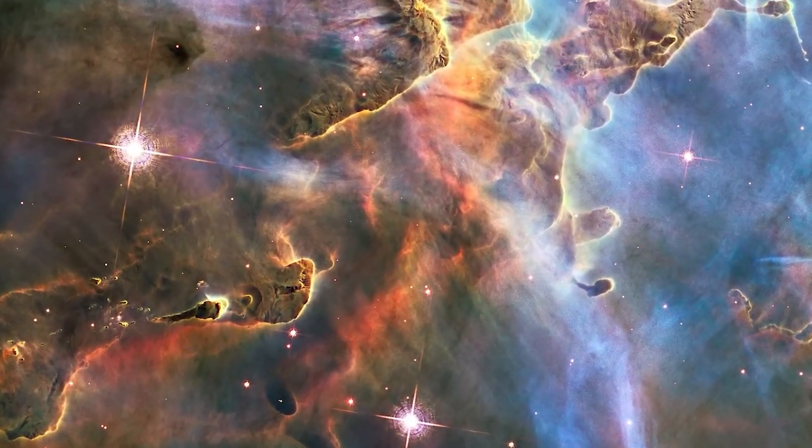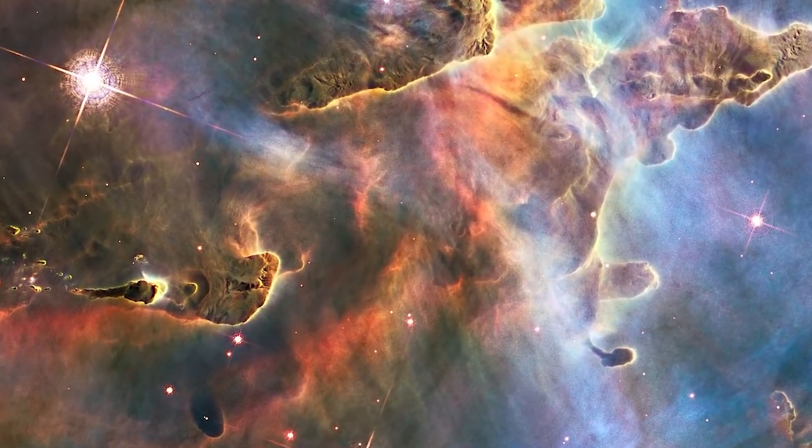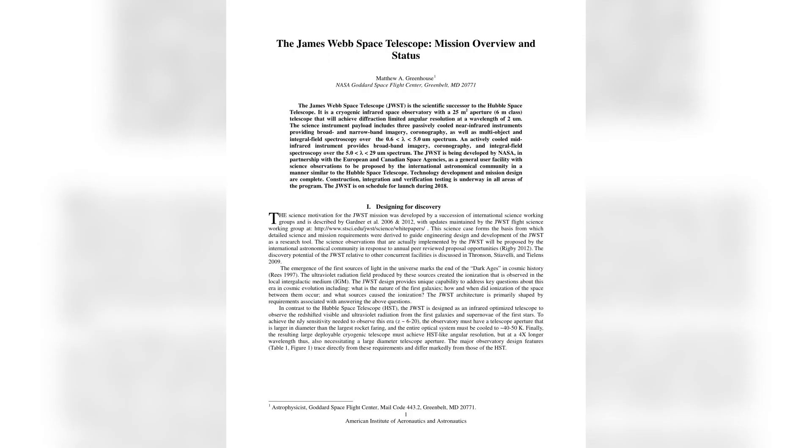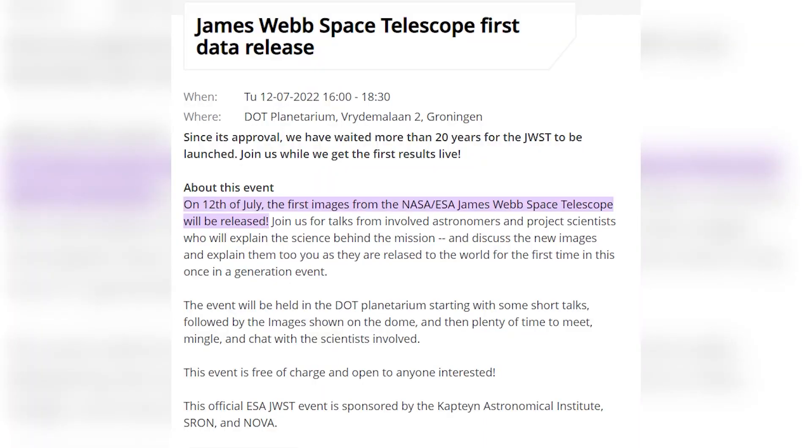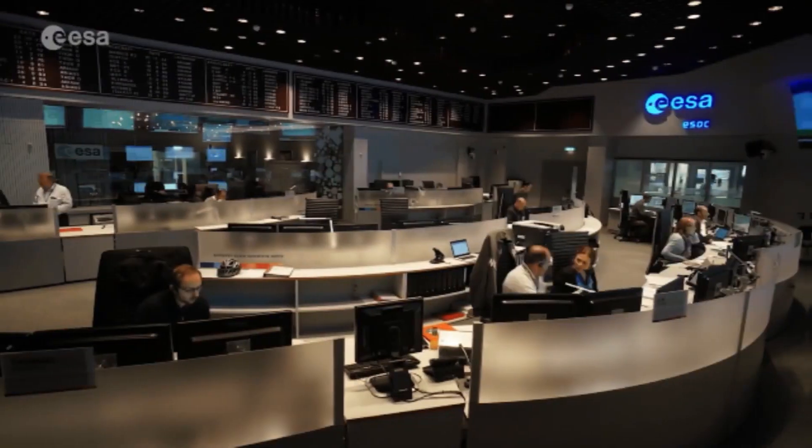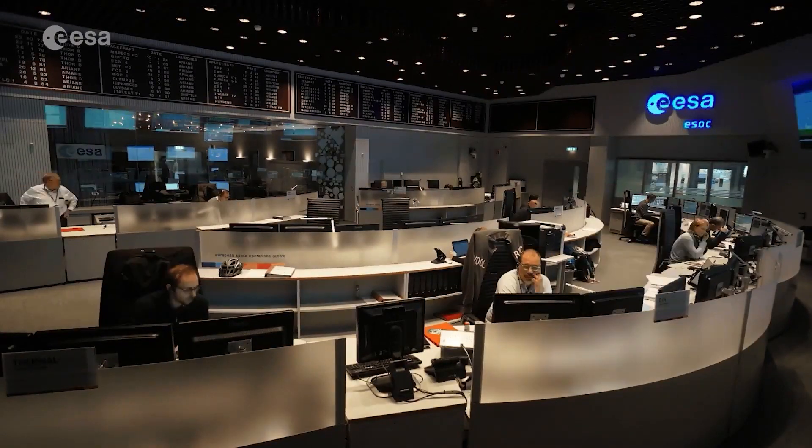Since then, the James Webb Space Telescope has given scientists more stunning cosmic photos. These images have confounded astronomers and cosmologists. Since Webb's photos and data were released, astronomical articles have flooded in. These papers have panicked cosmologists. Why this panic?